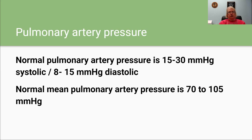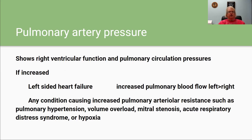Pulmonary artery pressure: the normal range is 15 to 30 systolic and 8 to 15 diastolic. The mean pulmonary artery pressure is between 70 and 105. Pulmonary artery pressure reflects right ventricle function and pulmonary circulation pressures. If increased, it indicates left-sided heart failure, increased pulmonary blood flow from left to right, or any condition causing increased pulmonary arterial resistance — such as pulmonary hypertension, volume overload, mitral stenosis, acute respiratory distress syndrome, or hypoxia.